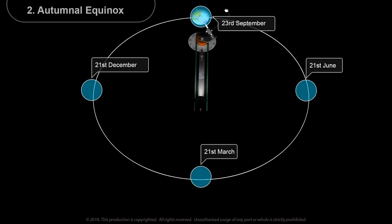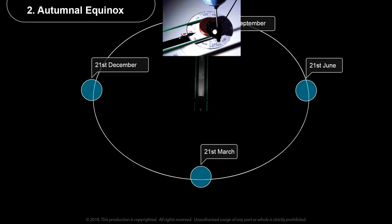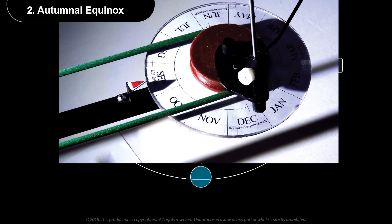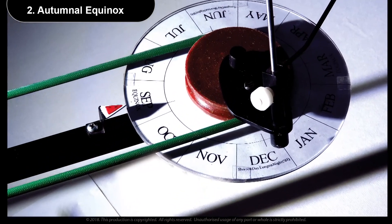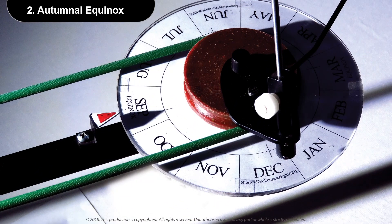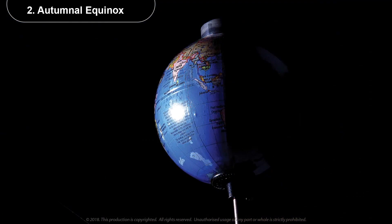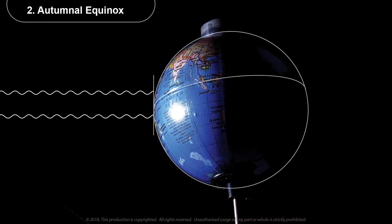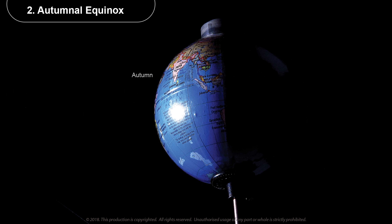The second position is the autumnal equinox, corresponding to the 23rd of September, as indicated by the pointer on the disc. The light from the lamp is falling normally — that is, at 90 degrees — on the equator. This is the beginning of autumn in the northern hemisphere and the beginning of spring in the southern hemisphere.